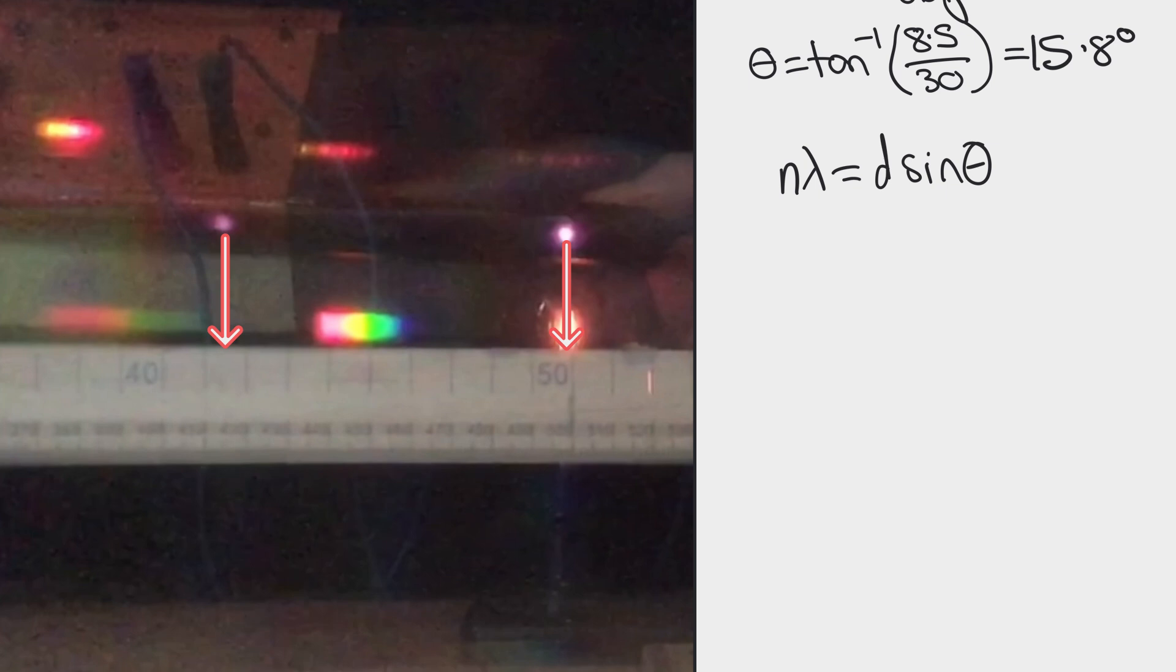In my case n is equal to 1 so I can just say that lambda equals d sin theta.